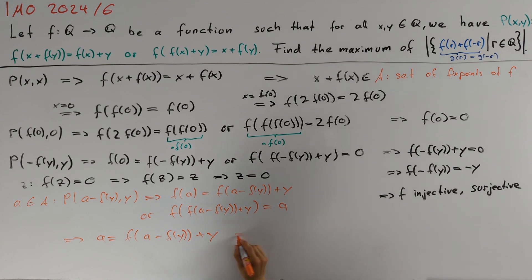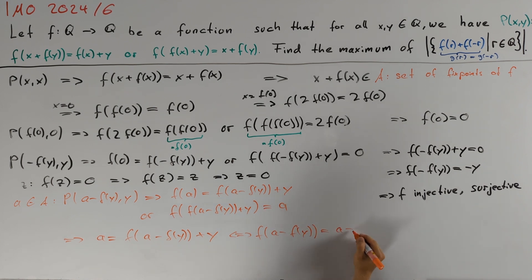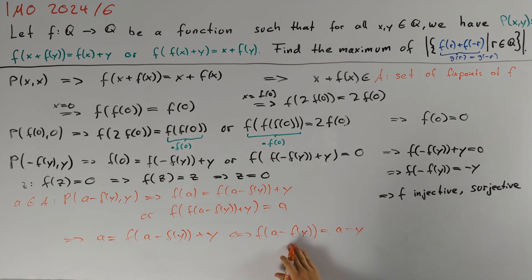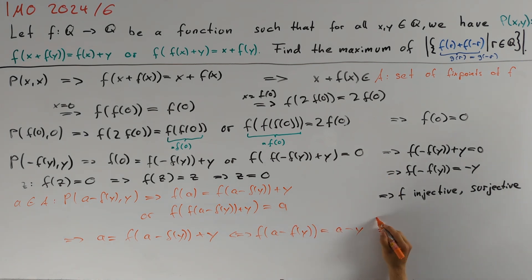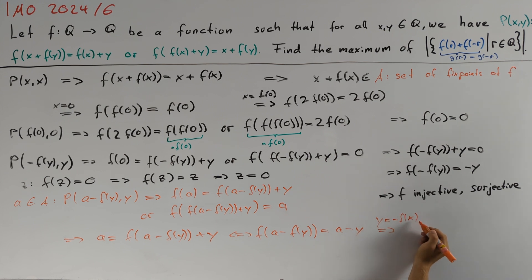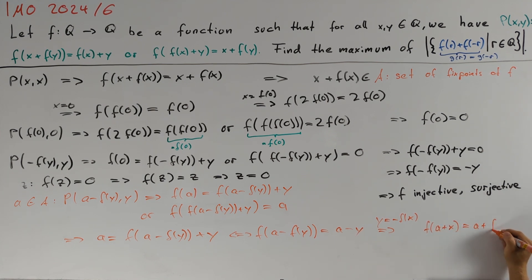Since a is a fixed point and f is injective, in both equations we can conclude that a = f(a - f(y)) + y. Rearranging gives that f(a - f(y)) = a - y. To get rid of the f inside the argument, we use our earlier equation by setting y = -f(x). The left side is then f(a + x) and the right side is a + f(x).